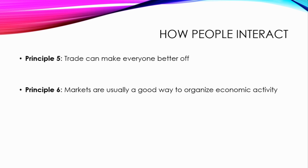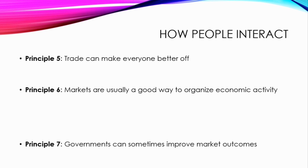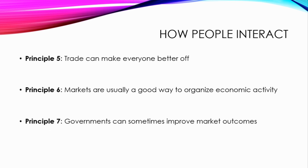Principle 7: governments can sometimes improve market outcomes. The market usually fails in providing efficiency and equity — either the producer exploits the consumers or consumers cheat the producers. When the invisible hands of demand and supply are unable to set efficient prices, the government intervenes to improve market outcomes.